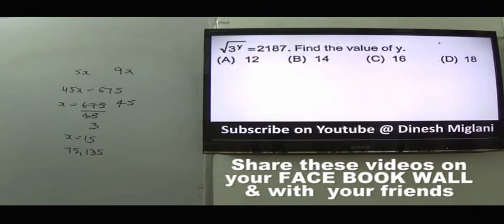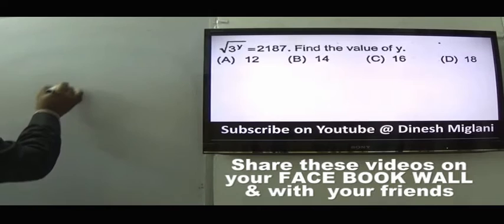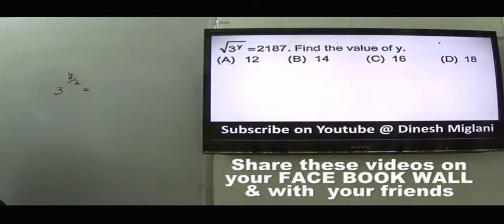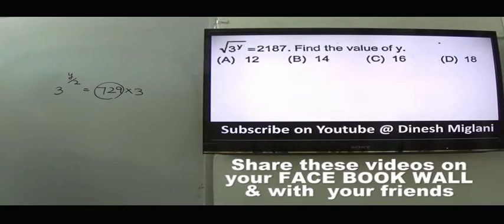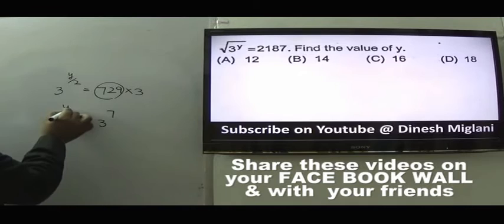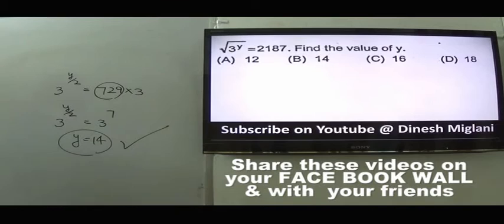Question 34: Given ³√y = some expression. Simplifying: 729×3 = 3^6×3 = 3^7. So 3^(7/2) = 3^(y/2), meaning y/2 = 7, y = 14. Answer is B.